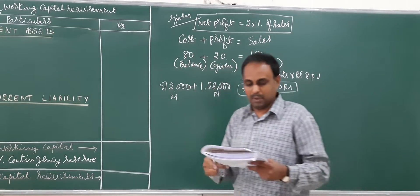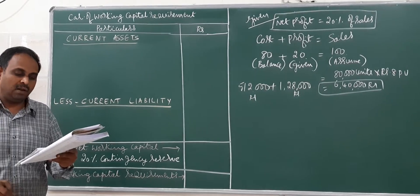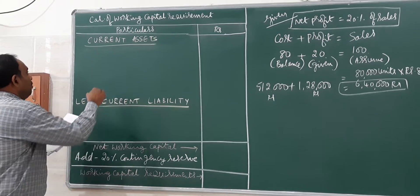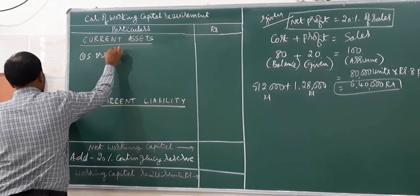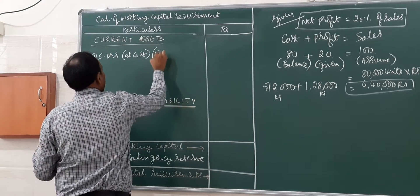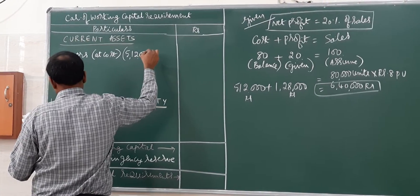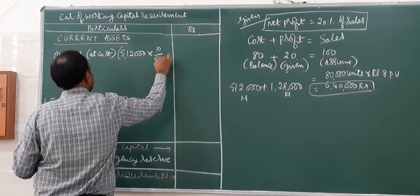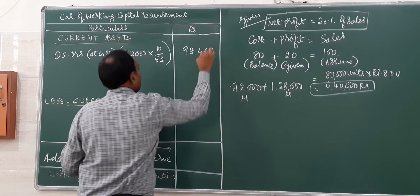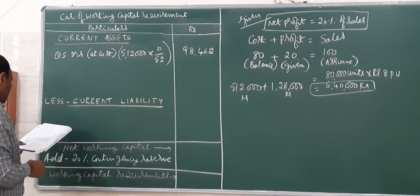Then we move into the information one by one. Average credit period allowed to customers — for debtors, the money will be received from customers. Sundry debtors at cost: five lakh twelve thousand, and credit allowed to them is ten weeks. So ten divided by fifty-two gives ninety-eight thousand four hundred sixty-one point five, taken as ninety-eight thousand four hundred sixty-two.